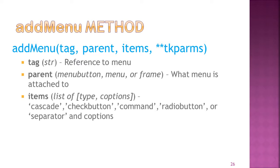The addMenu method takes a tag — almost every object in TKEnterToy has a tag — then a parent (what the menu is attached to: a frame, a menu, or a menu button), and the items list. The items list is a list of lists, each with two elements: the first is a type string (cascade, checkbutton, command, radiobutton, or separator), and the second is a dictionary of options.